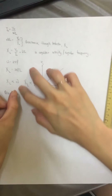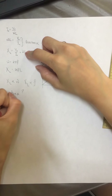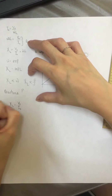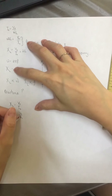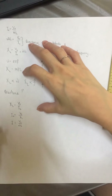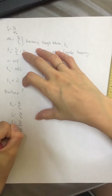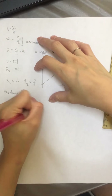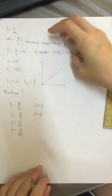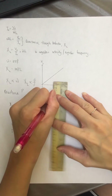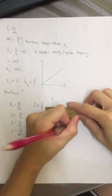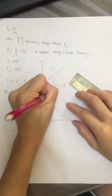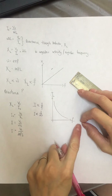XL equals V₀ over I₀, so I₀ equals V₀ over XL. Since XL equals 2πfL equals ωL, we have I₀ equals V₀ over 2πfL. In other words, current is inversely proportional to frequency f, and inversely proportional to angular frequency ω. When frequency increases, current I decreases.